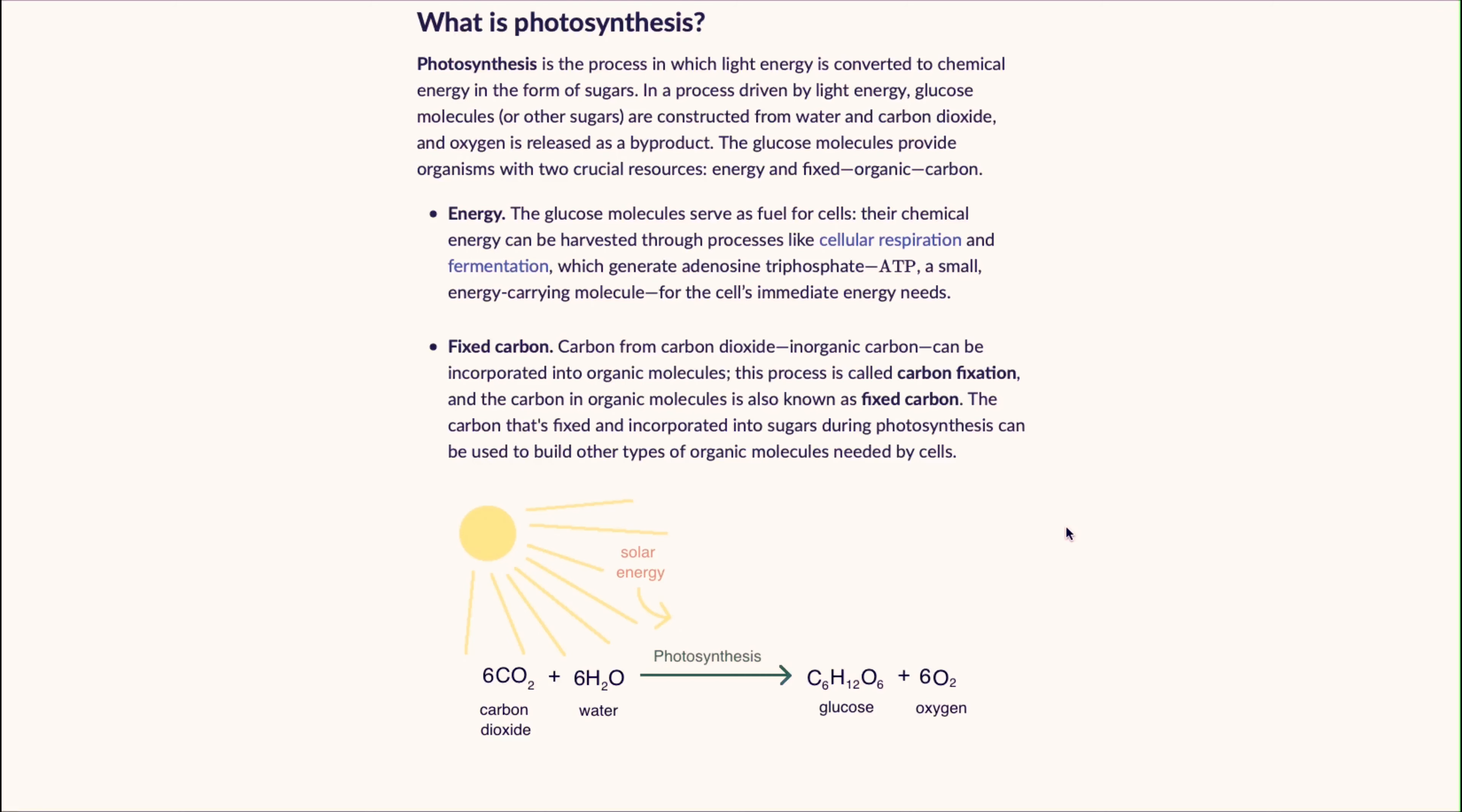The glucose molecules provide organisms with two crucial resources: energy and fixed organic carbon. The glucose molecules serve as a fuel for cells. Their chemical energy can be harvested through processes like cellular respiration and fermentation, which generate ATP, a small energy carrying molecule.